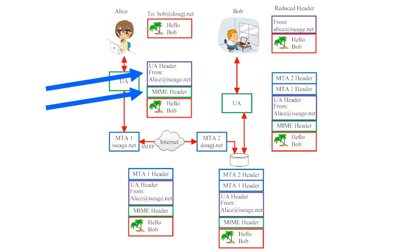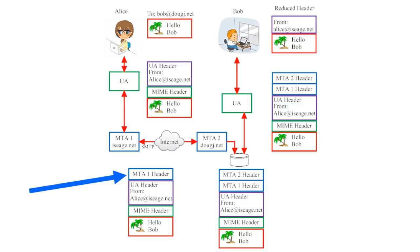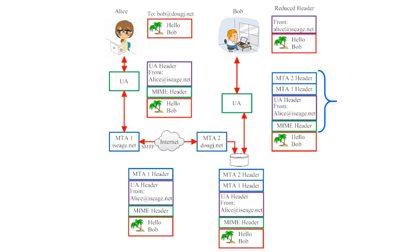The MIME header on an email explains what the email contains — in this case, it will say that Alice's email contains text and an image. When the message goes to the first message transfer agent, that MTA leaves a header of its own so there's a record of where the email has been. All subsequent MTAs will leave headers of their own as well. In this illustration there are only two MTAs, so the email picks up two MTA headers. The email arrives at Bob's user agent with all of these headers attached. In many cases, the headers end up being much longer than the email message itself. To reduce clutter, most modern user agents won't display all of these headers by default.